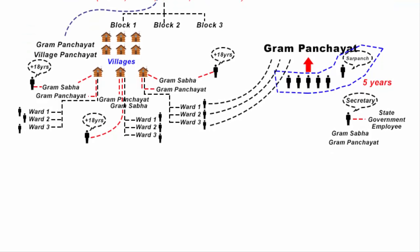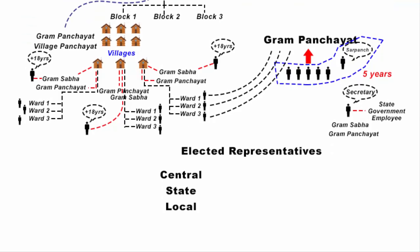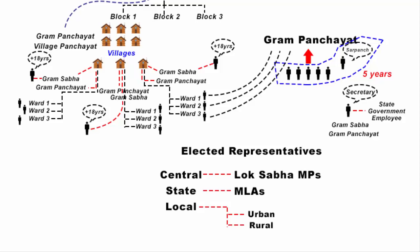Elected officials come at three levels: centre, state and local. At centre we have the MPs of Lok Sabha; at state we have the MLAs; and at local level we have corporators in urban areas and Panch members in rural areas. All these are elected members chosen by direct election — it's a system of choosing political office holders.